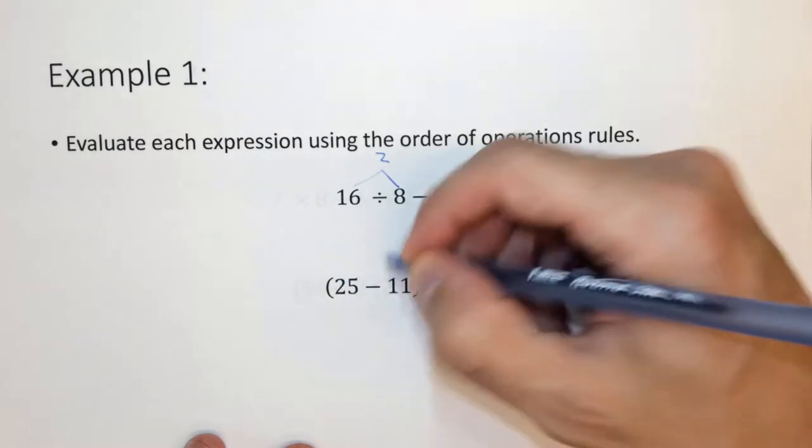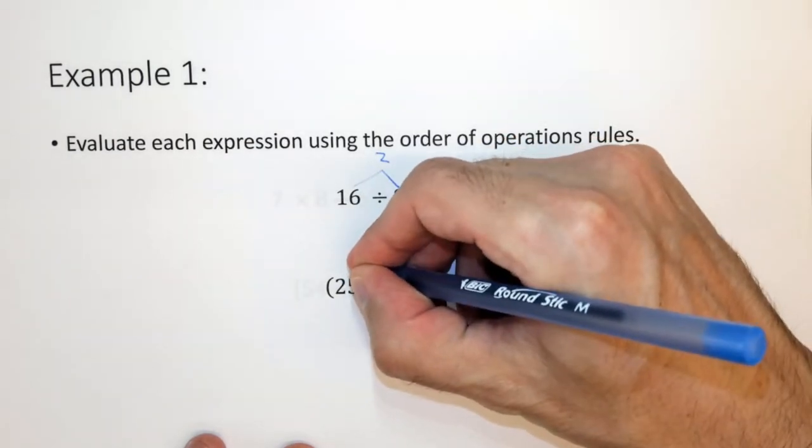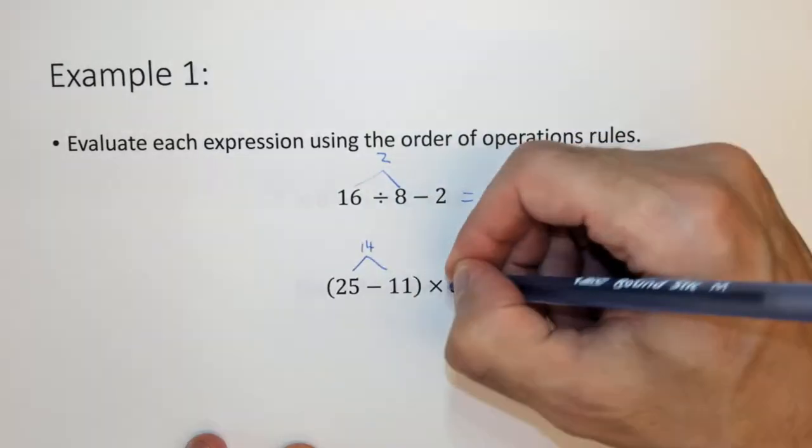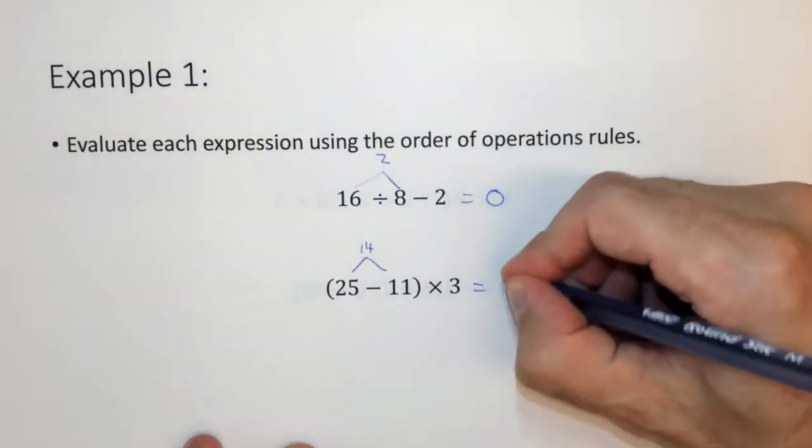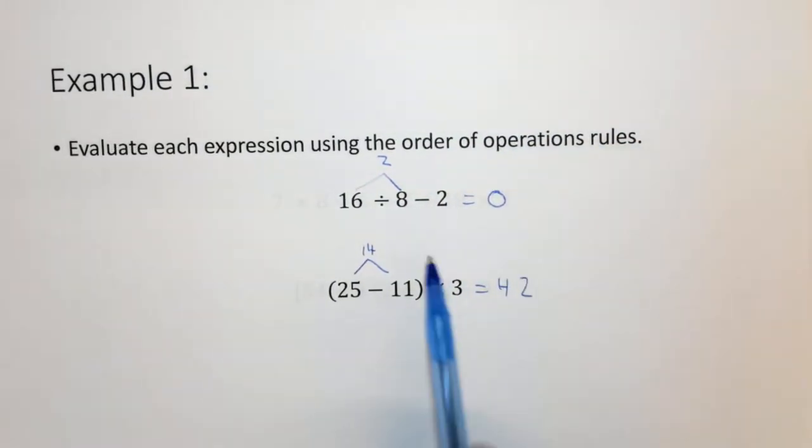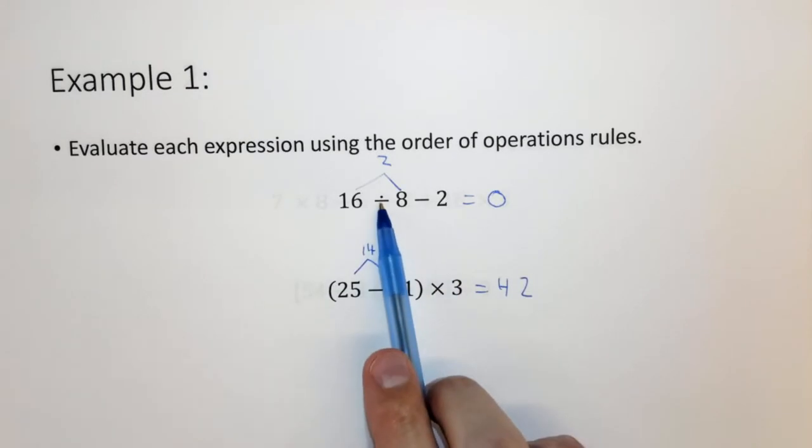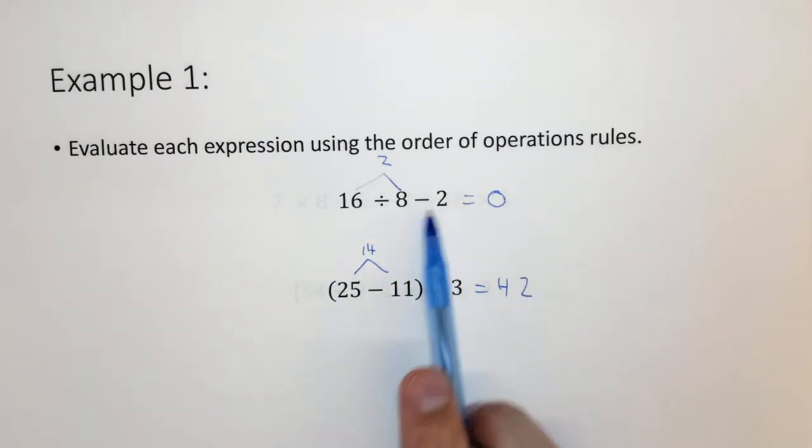So in this case, we want to take 25 minus 11, which is 14, and then multiply 14 by 3, which is 42. So if there's no parentheses, we do multiplication and division before we do addition and subtraction. If they're in parentheses, we do whatever's in the parentheses, doesn't matter what it is, before we do the thing that's not in the parentheses.